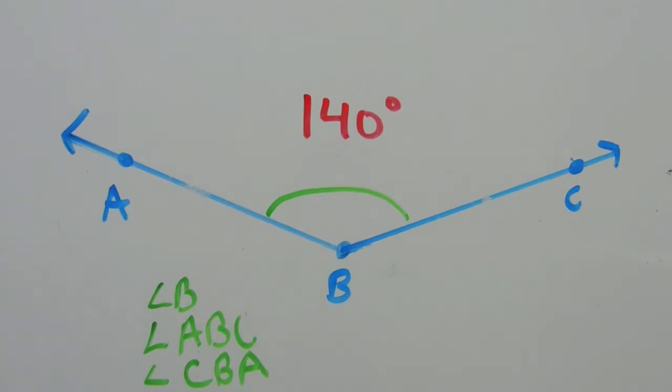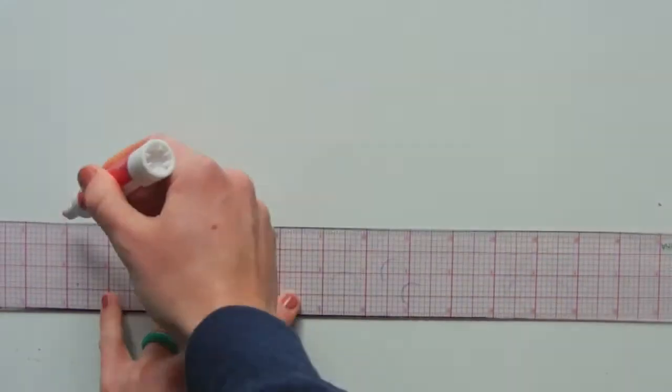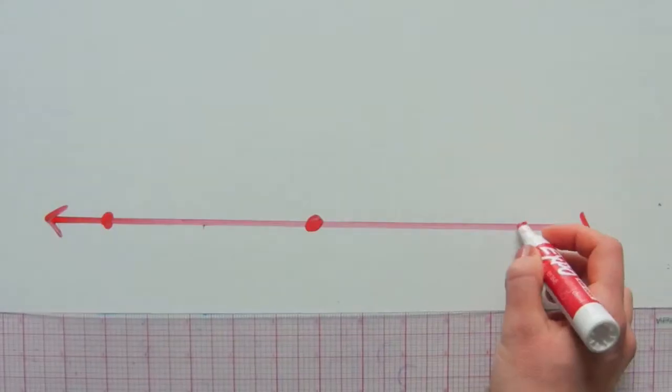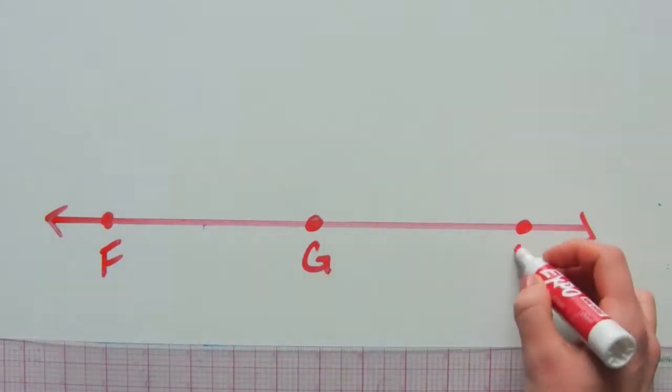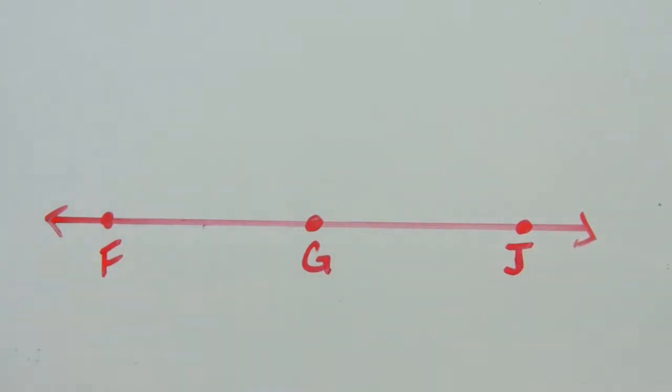Let's go over one more example. Looking at this next example, you can see I have two rays branching out from point G. So our vertex is G. We have side GJ, which is the ray GJ.